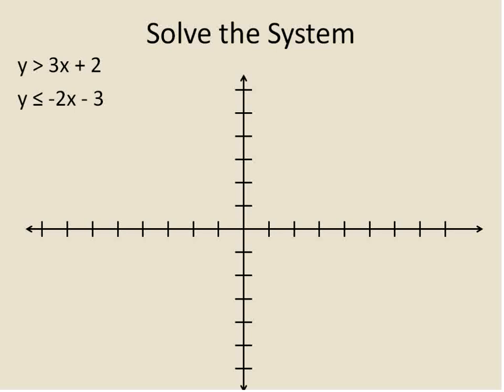So we're asked to solve y is greater than 3x plus 2, and y is less than or equal to negative 2x minus 3. To do that, first we're going to graph one of our inequalities, and then I'm going to clear the board, and then we'll graph the other one, and then we'll put what we make together.